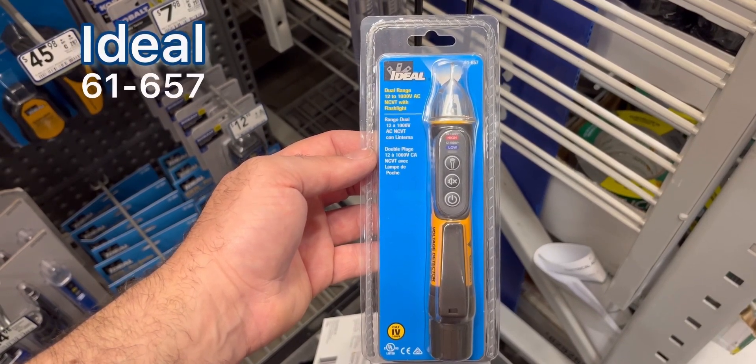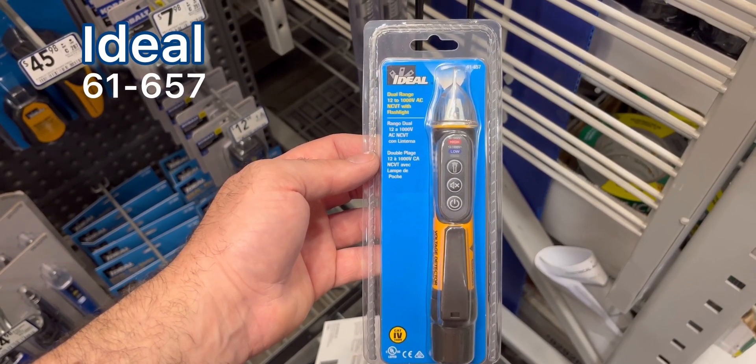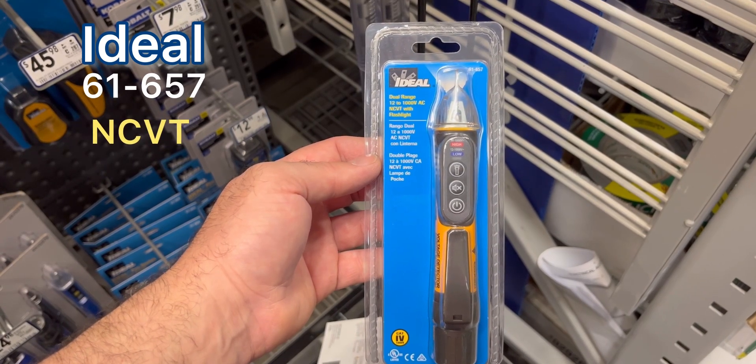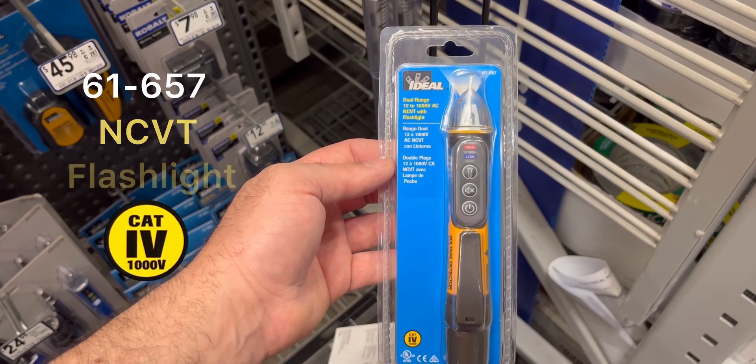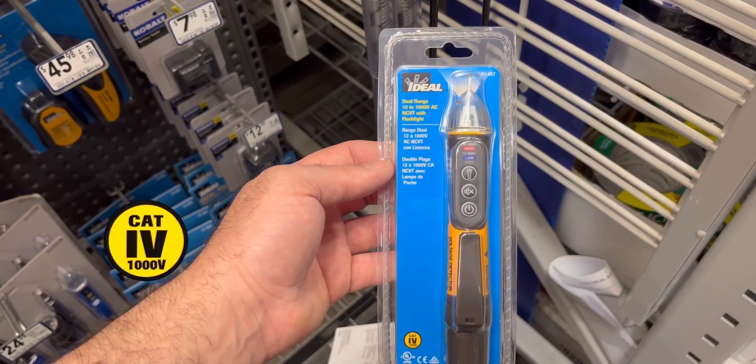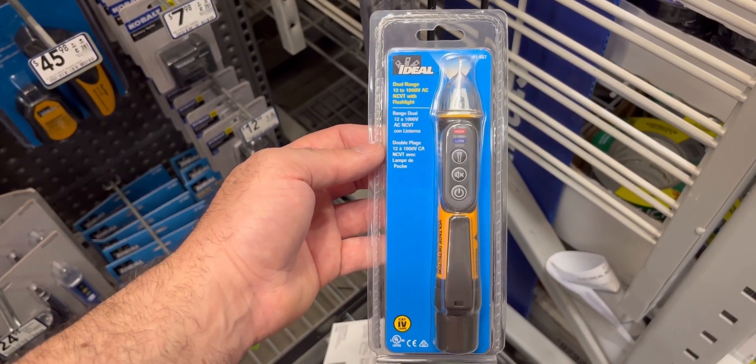This is the Ideal 61-657 and it's the NCVT with a flashlight. It's category 4, 1000 volt rated and it's from Ideal Industries. Have a close look at this.